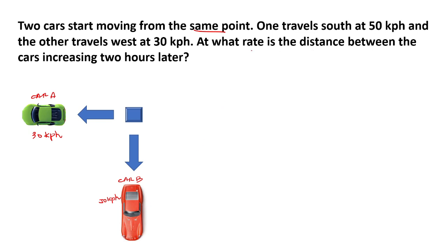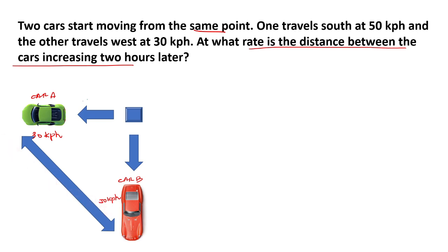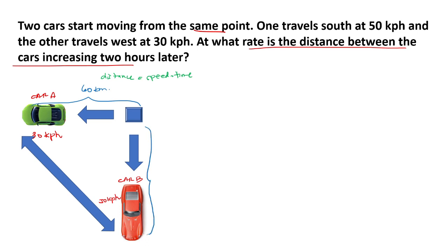We are asked to get the rate of the distance between the cars increasing two hours later, so we need to get the derivative of this distance. Remember that distance is equal to speed times time. Therefore, after two hours, car A traveled 60 kilometers (30 times 2), and car B traveled 100 kilometers (50 times 2). Assigning variables: x is the distance for car A, y is the distance for car B; dx/dt is 30 km/hr and dy/dt is 50 km/hr.